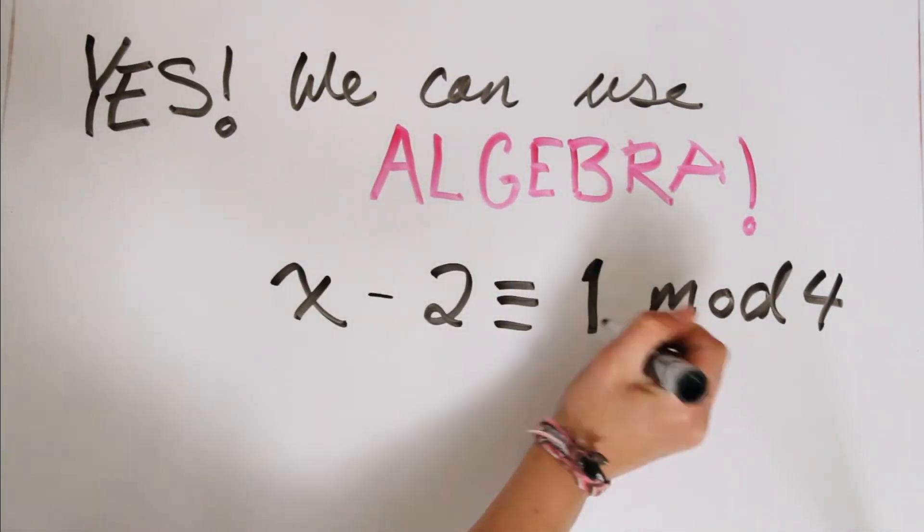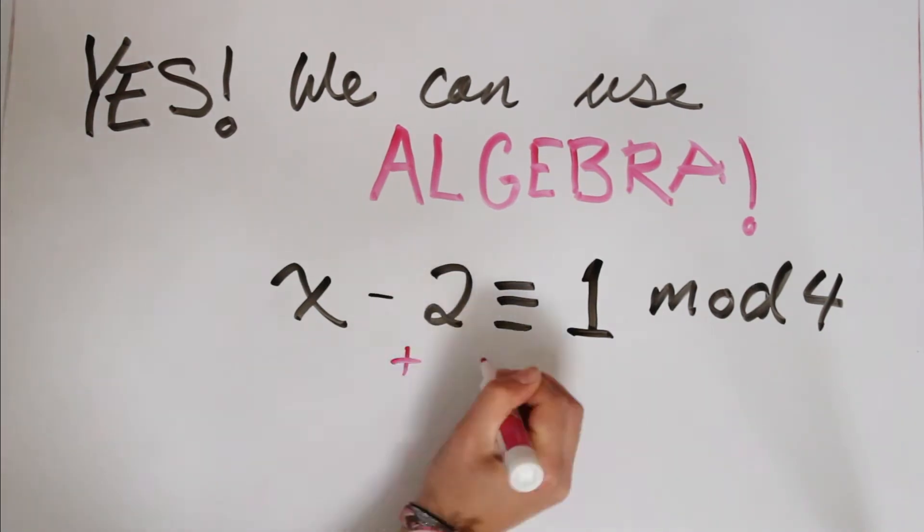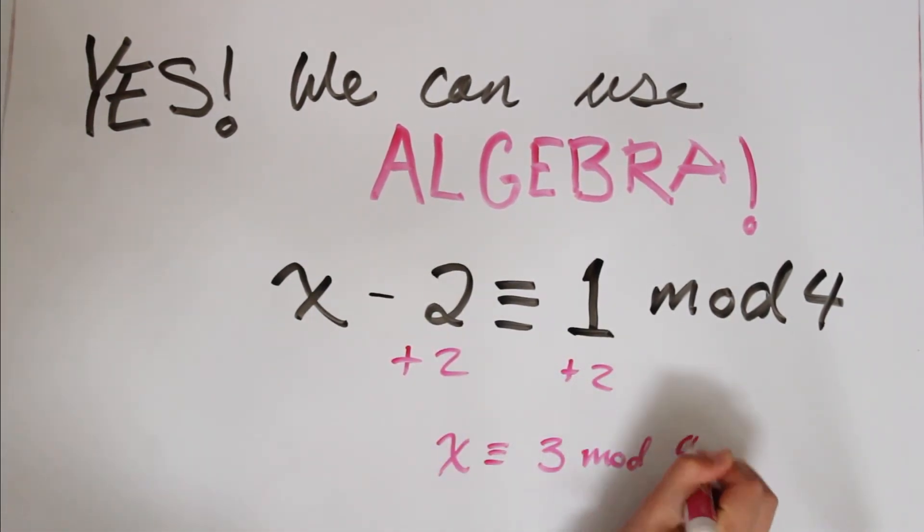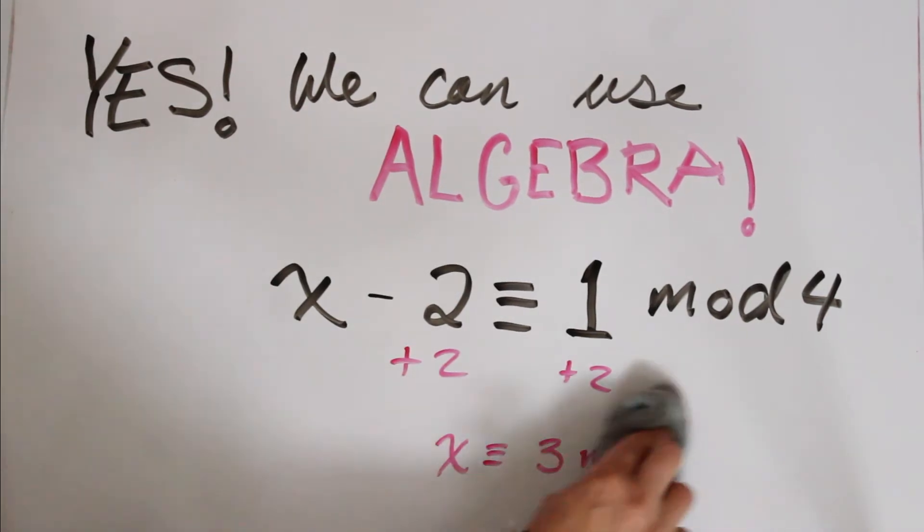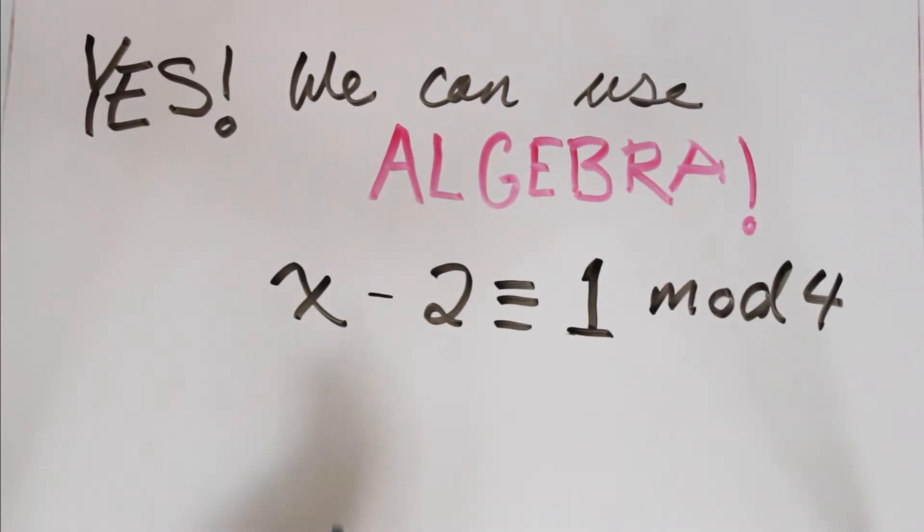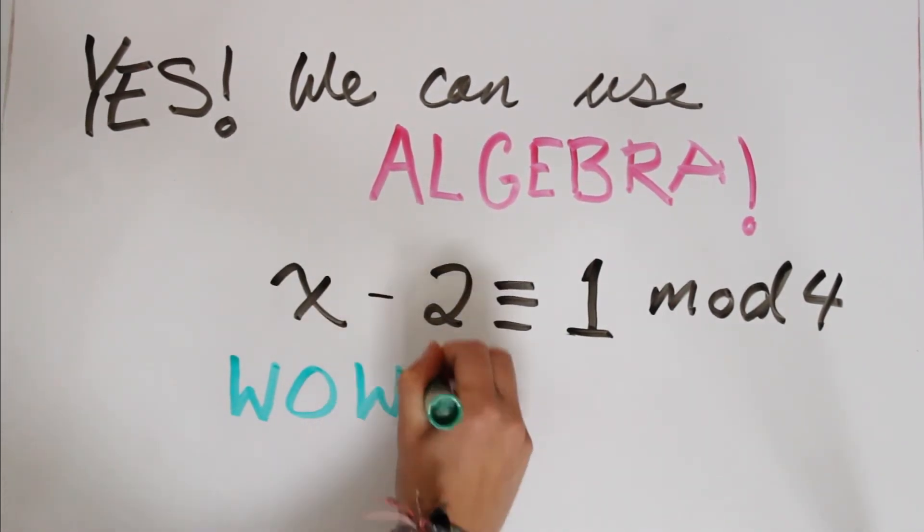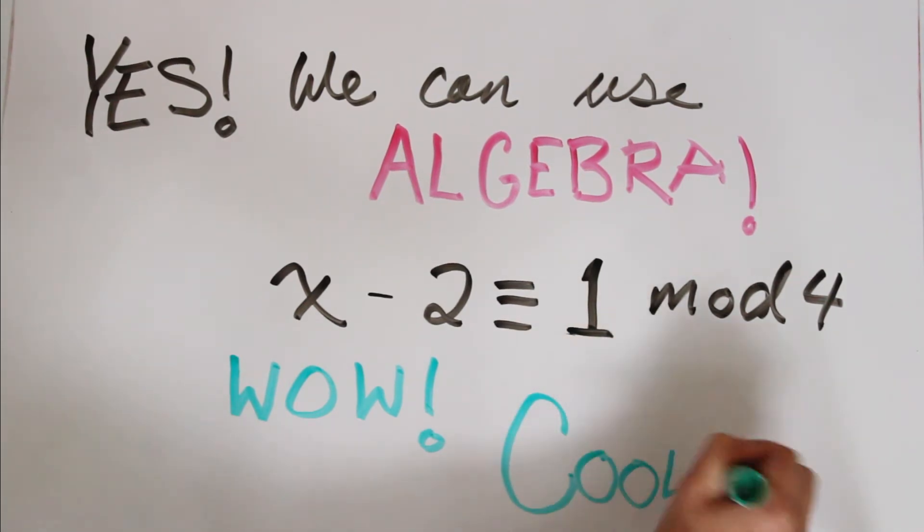Same thing if we have subtraction. x minus 2 is congruent to 1 mod 4, add 2 to both sides, and x is congruent to 3 mod 4. So this is a very useful technique, and we'll talk about this in later videos. These are actually called linear Diophantine equations.